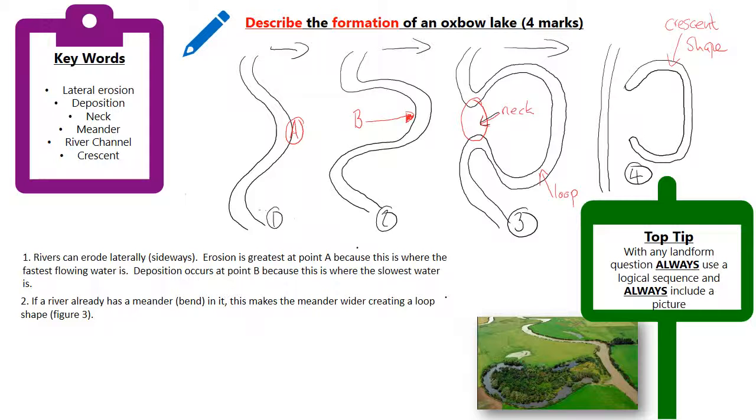Over time, the loop becomes wider and the neck becomes narrower. So again, I'm just describing that neck and the loop, and it's easy if I've got a picture there. And then I've said that eventually the ends of the loop join.